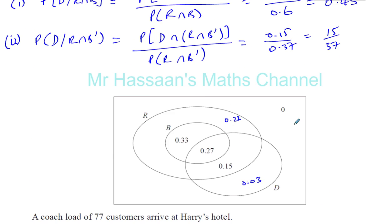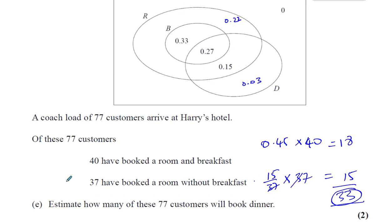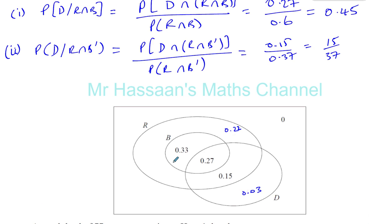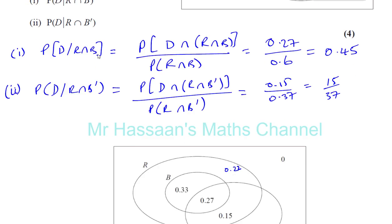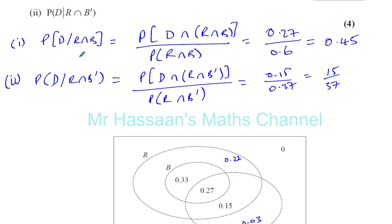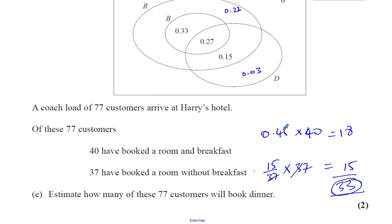Basically, question part D leads you on to understand how to apply question E to what we've just done. 40 have booked a room and breakfast — how many of these also book dinner? That's exactly the conditional probability from part D1, giving 0.45. And the second group booked a room without breakfast, which is R intersection B complement, giving 15 over 37. Multiply each probability by the respective count, add them together, and you get your total estimate of 33 who booked dinner.